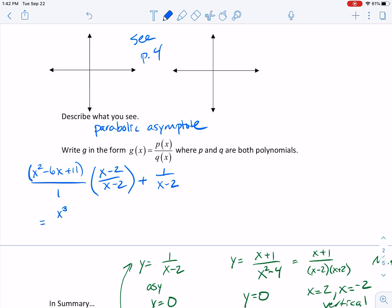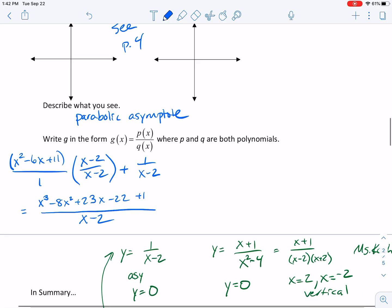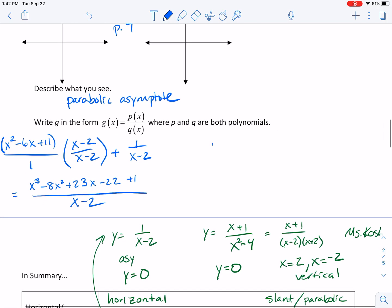X cubed, I see a minus two x squared and a minus six x minus eight x squared. I see a plus 12 and a plus 11, so plus 23x. And then I see a minus 22 and a plus one from the other term all over x minus two. And so the final answer, this g of x would be equal to x cubed minus eight x squared plus 23x minus 21 over x minus two.